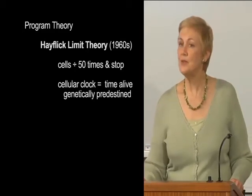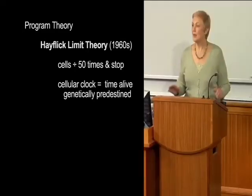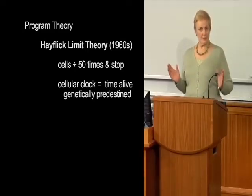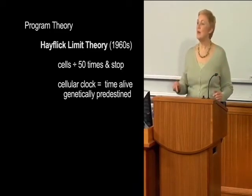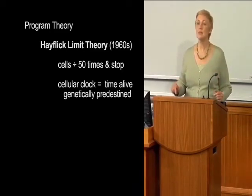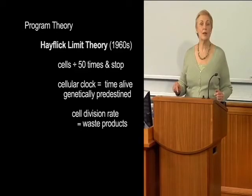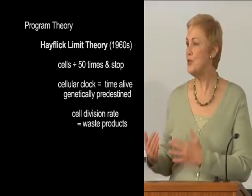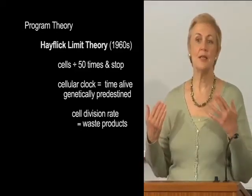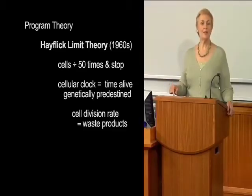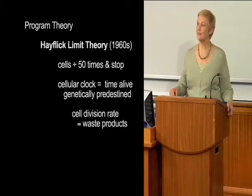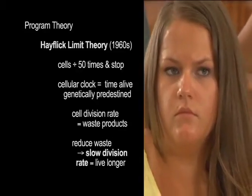But there is some good news here. The rate of cell division is directly affected by the amount of waste products in the cell. So if we reduce the amount of waste, then the cells will divide more slowly. This means we can slow the hands of the clock and live longer. So, how do we reduce cellular waste?